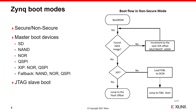In JTAG boot mode, the boot ROM code does minimal system configuration and enables a JTAG interface. The JTAG chain routing can be configured for cascaded or independent mode. The slave boot modes require an external processor or controller to load the programmable device image. An advantage of using a slave boot mode is that the device image can reside almost anywhere in the host system or over a network connection.